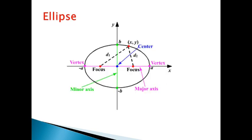Here's a picture of an ellipse. It has a major axis in purple, whose endpoints on the ellipse are called vertices. The minor axis, shown in green, is the shorter of the two axes, and its endpoints b and negative b are called covertices.